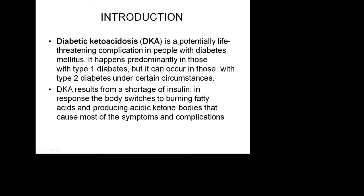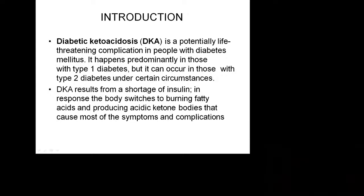Diabetic ketoacidosis, or DKA, is a potentially life-threatening complication in people with diabetes mellitus. It happens predominantly in those with type 1 diabetes because insulin secretion is almost zero, but it can occur in type 2 under certain circumstances. DKA results from a shortage of insulin; the body switches to burning fatty acids and producing ketones, which causes most of the symptoms. Because of the absence of insulin, carbohydrates cannot be metabolized, so fat is used, and during that metabolism, ketones are produced.